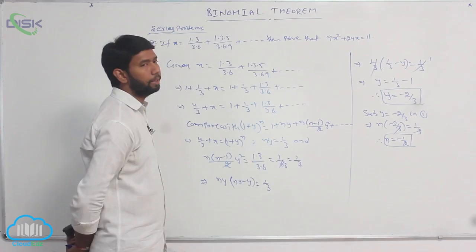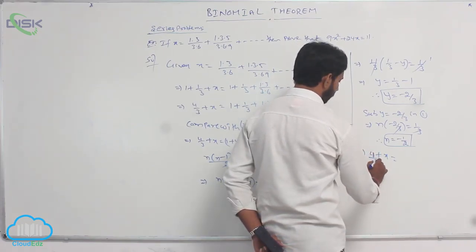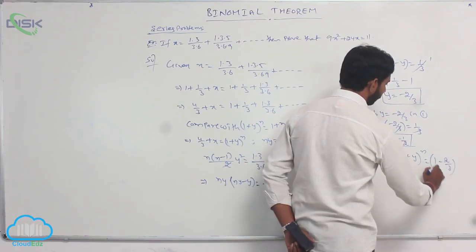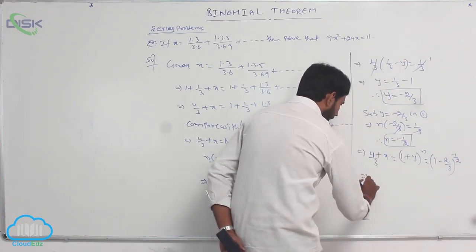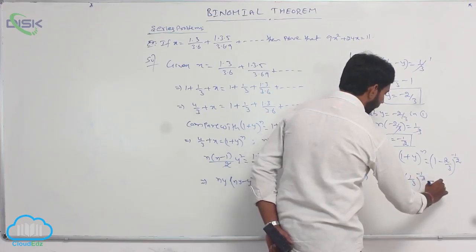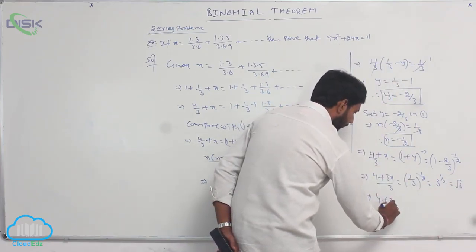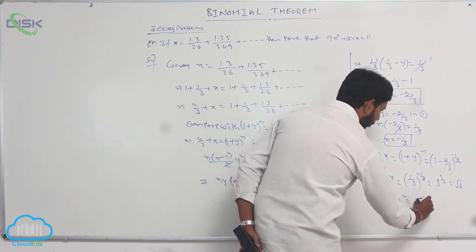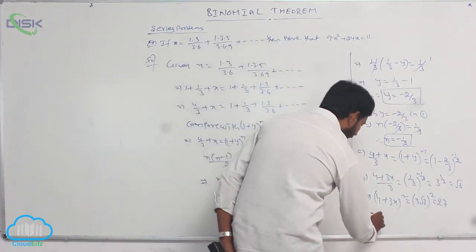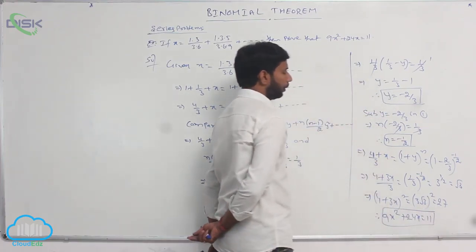Here y = −2/3 and n = −1/2. That implies 4/3 + x = (1 + y)^n = (1 − 2/3)^(−1/2). Taking LCM, that is (4 + 3x)/3 = √3. Squaring both sides, (4 + 3x)² = 3 × 3² = 27. Therefore 9x² + 24x = 11.